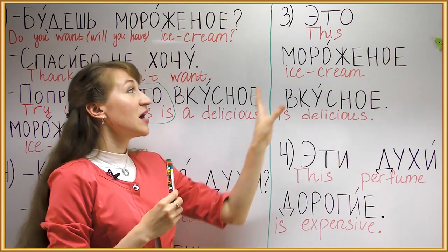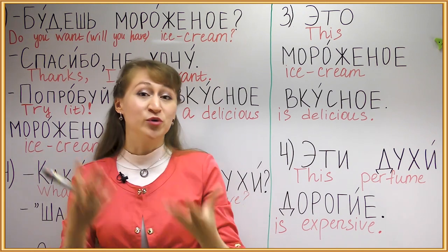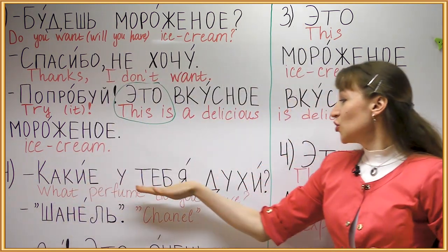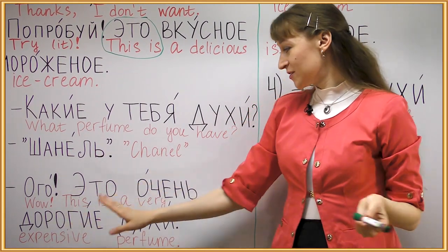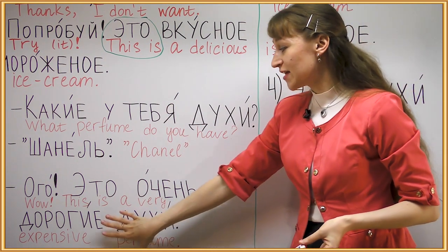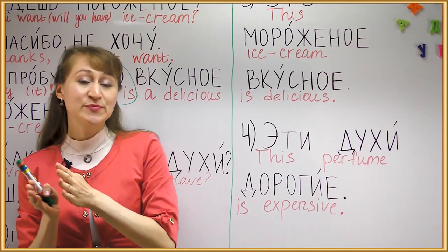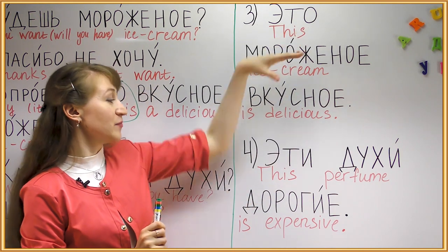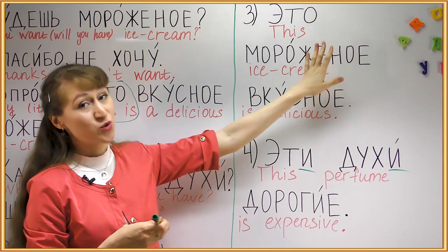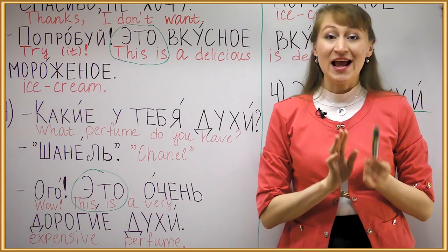Это мороженое вкусное emphasizes мороженое — 'this ice cream is delicious,' this particular brand, not that one. Какие у тебя духи? Шанель! Ого, это очень дорогие духи. Again, unchanging это gives a definition to the noun mentioned previously. Compare: эти духи дорогие — 'this particular perfume is expensive, not that one.' Remember the demonstrative pronoun agrees with the noun: духи is plural so эти; мороженое is neutral so это. With unchanging это there is no change.